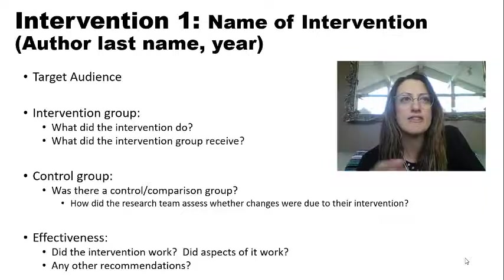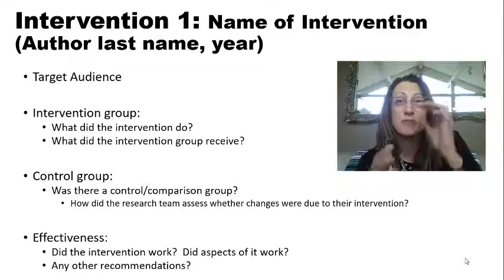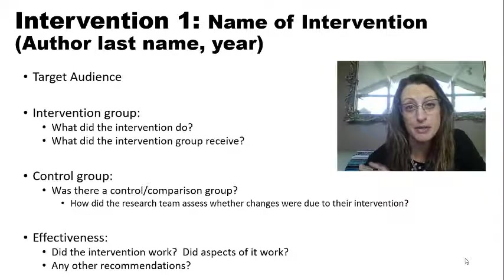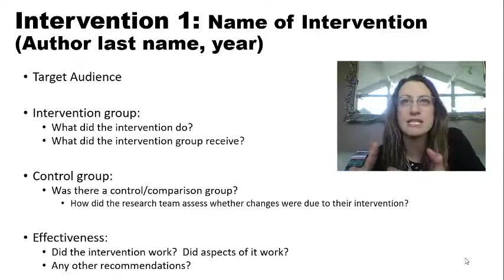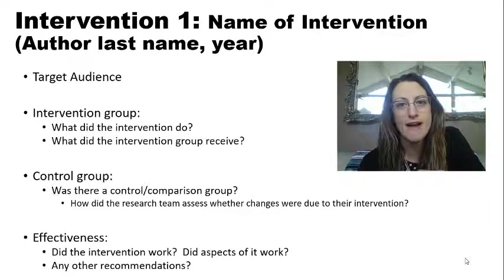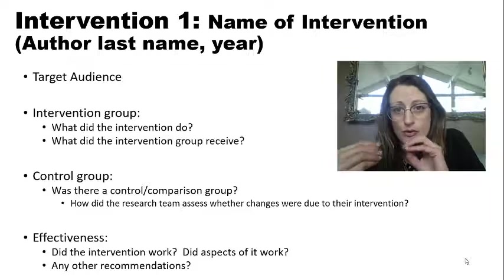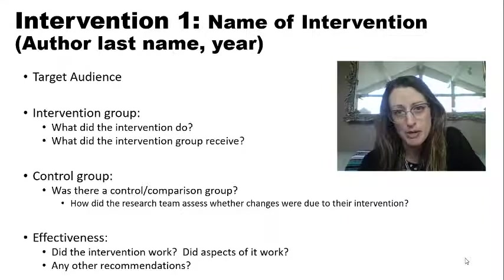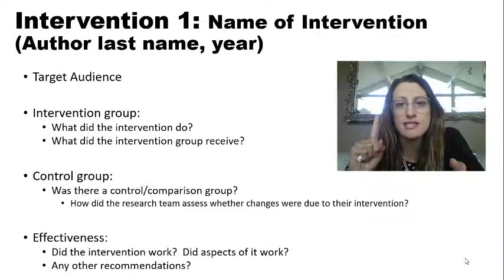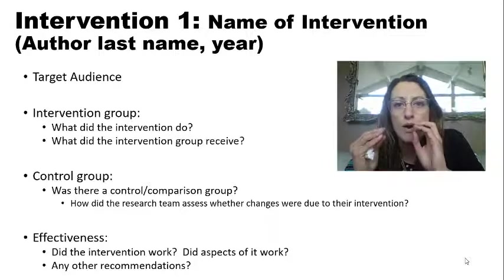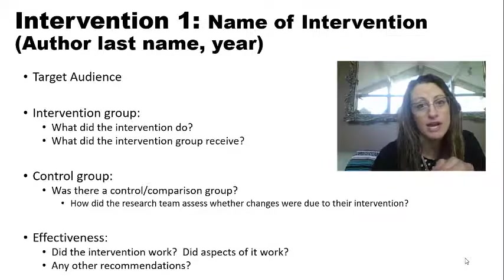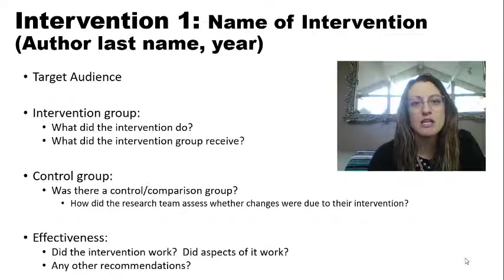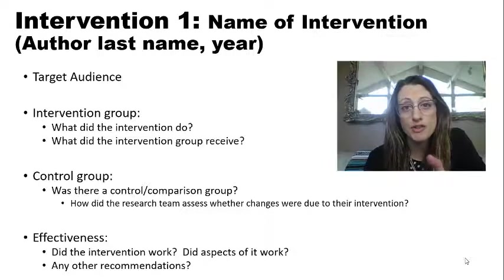Next, describe what was the intervention. If there's an intervention and control group, describe what each group received. The control group might get a placebo, health education alone, or standard care treatment. List the different components the intervention group received — did they get education, resources, a policy change? What was put into place to create change and help reduce the health disparity? If there's a control group, also describe what they got.